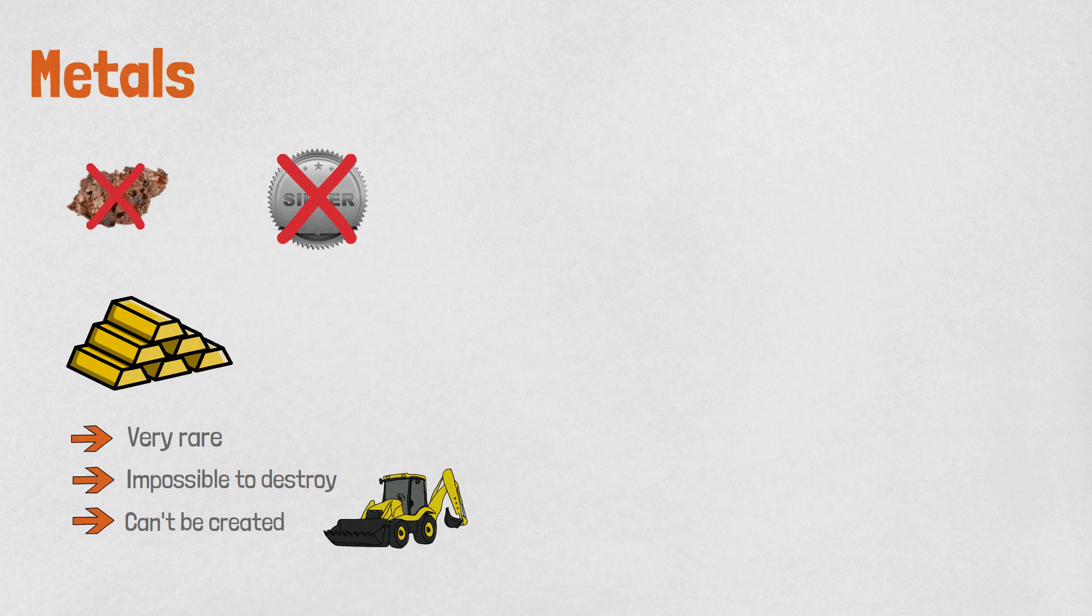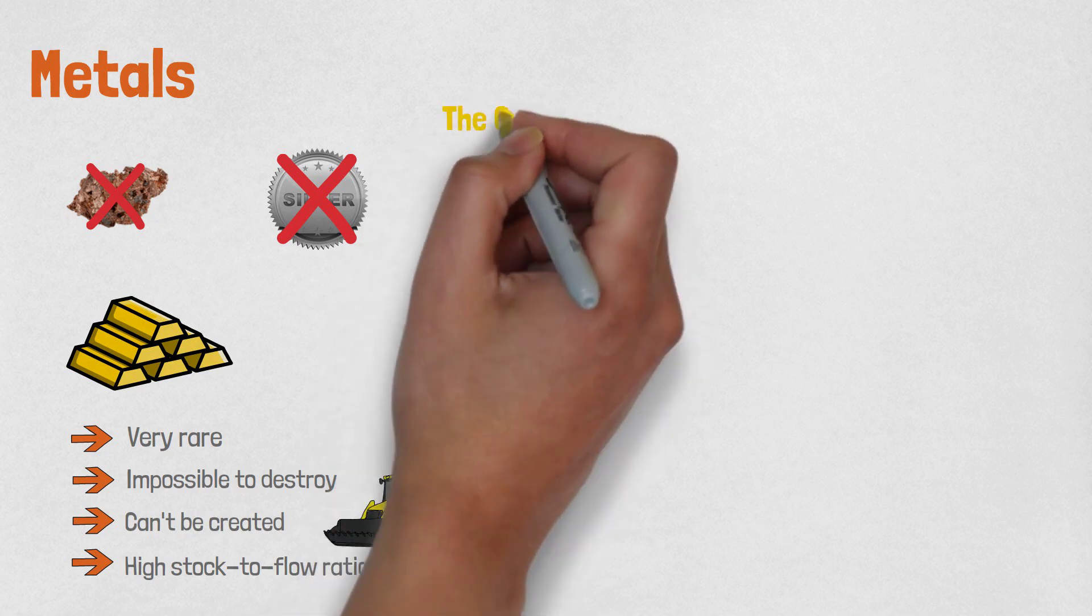So when the demand for gold increases, people cannot easily increase its supply. Also, gold has a very high stock to flow ratio. The number of flow compared to the stock is pretty low. That makes gold's inflation low and stable. Because of those reasons, gold managed to survive as a form of money throughout history.